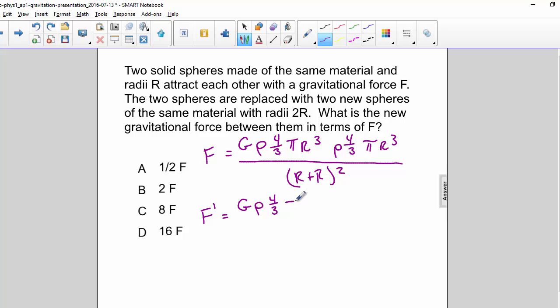F prime equals G rho 4 thirds pi 2R cubed rho 4 thirds pi 2R cubed divided by 2R plus 2R squared.